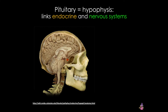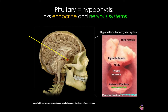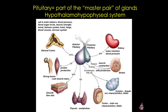The pituitary gland is a small bean-shaped gland about the size of a pea, and it's located at the base of the brain. The pituitary, or the hypophysis, is a major endocrine organ that links the nervous system — more specifically the hypothalamus — to the endocrine system. The pituitary is also considered the master gland.